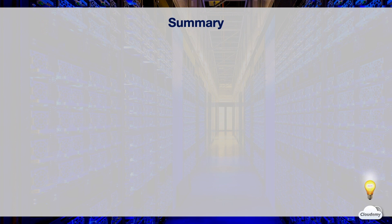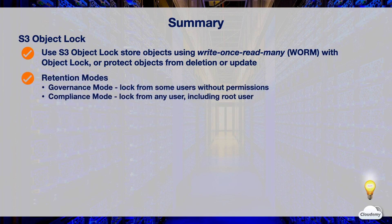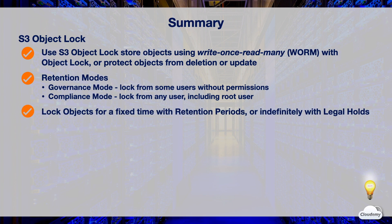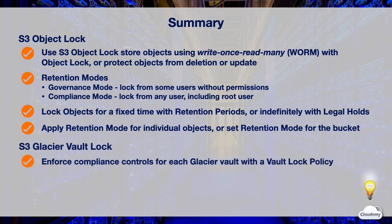In this episode, we've learned about S3 Object Lock and Glacier Vault Lock. You can use S3 Object Lock to store objects using the WORM model to prevent objects from being deleted or overwritten. It provides two retention modes — Governance Mode, which prevents deletion by most users unless they have special permissions, and Compliance Mode, which prevents deletion or update by any user including the root user. You can lock objects for a fixed time with retention periods, or indefinitely with legal holds. You can apply a retention mode per object version or set a default for the whole bucket. S3 Glacier Vault Lock lets you enforce compliance controls on each Glacier vault — once a vault is locked, the vault lock policy can no longer be changed.